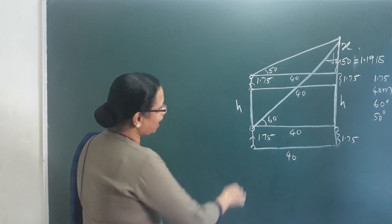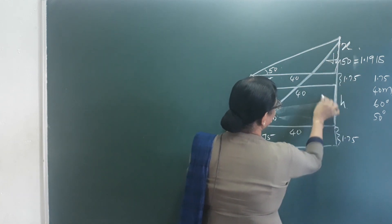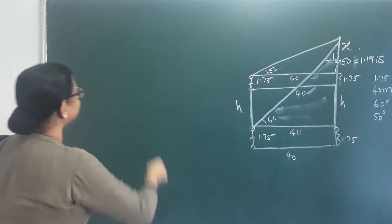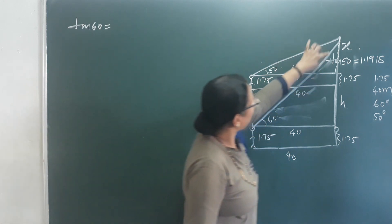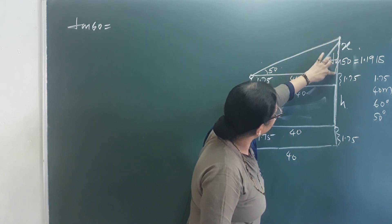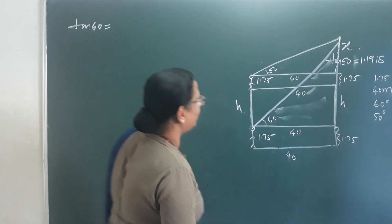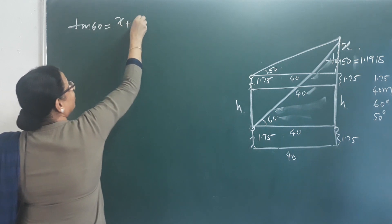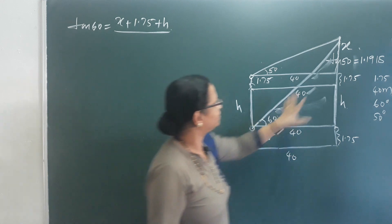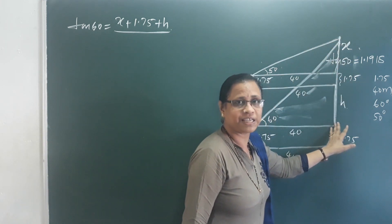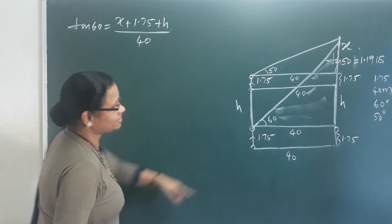We will look at this right triangle. Tan 60 is equal to opposite side over adjacent side. The opposite side is X plus 1.75 plus H. The adjacent side is 40.